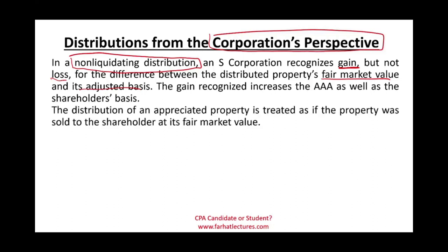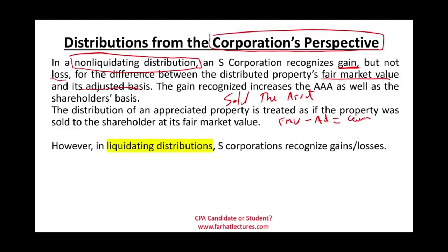Think of it this way: the distribution is as if the S corporation sold the asset. If the asset is sold for more than its adjusted basis, the asset will have a gain. Simply put, we compare the fair market value minus the adjusted basis. If you did sell it and you have a gain, you recognize the gain, and that gain will increase the basis for the shareholder as well as the AAA account.